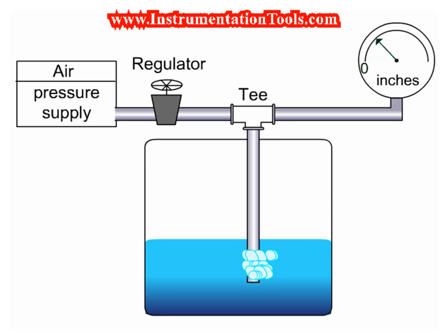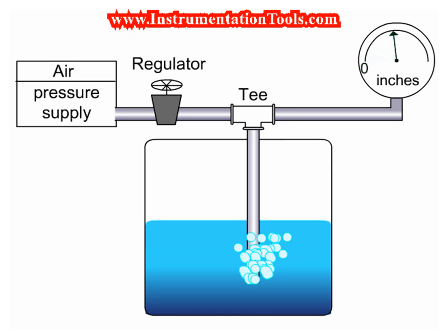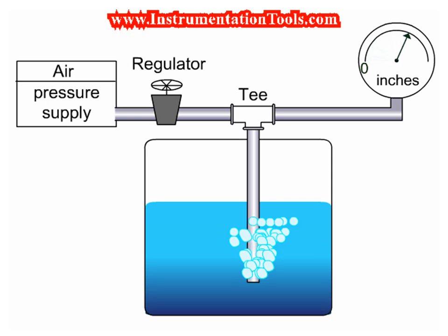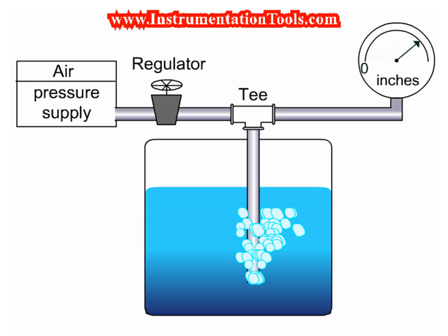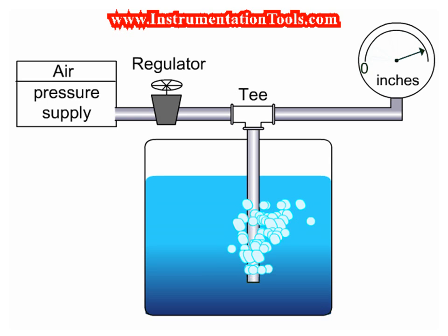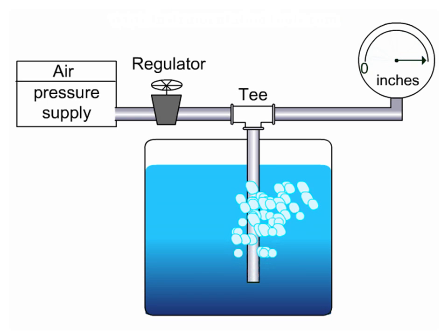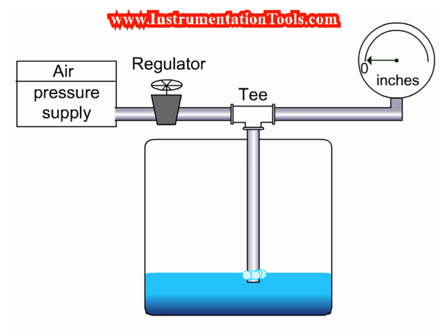When the tank level is higher, the back pressure increases. With the use of electronic transmitters, like pressure transmitters, we can convert the back pressure signal into a 4-20 mA level signal.